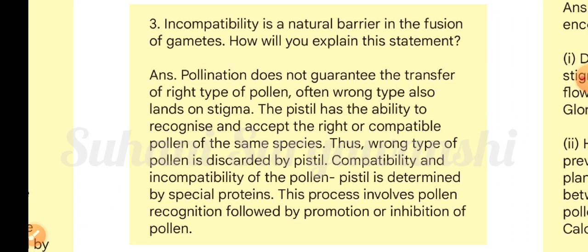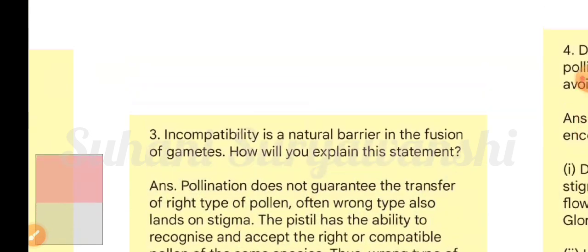Question three: incompatibility is a natural barrier in the fusion of gametes — explain this statement. Pollination does not guarantee the transfer of the right type of pollen; often wrong types of pollens land on the stigma. The pistil has the ability to recognize and accept only the right or compatible pollen of the same species. Wrong type of pollen is discarded; compatibility and incompatibility of the pollen-pistil interaction is determined by special proteins, involving pollen recognition followed by promotion or inhibition of pollen germination.